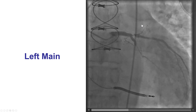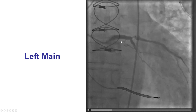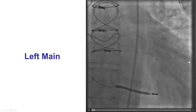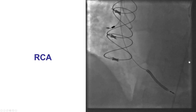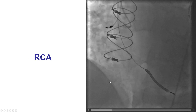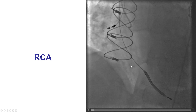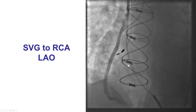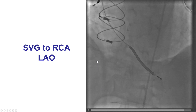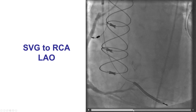The LAD was known to be occluded with no viability in the anterior wall. There was a new lesion in the origin of a fairly large Ramus branch. The right coronary artery had a near occlusion in the mid-segment after this acute marginal. However, there was a patent saphenous vein graft to the distal right coronary artery that was supplying the posterolateral and the PDA.